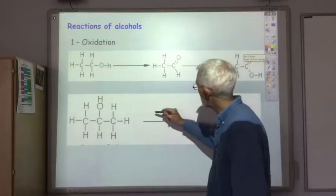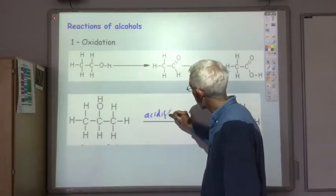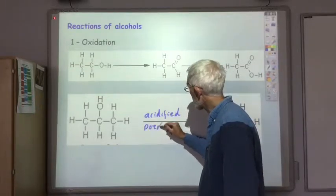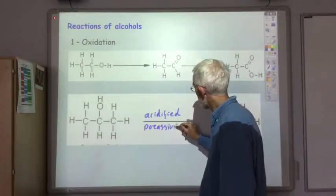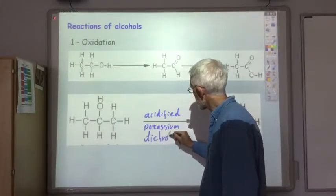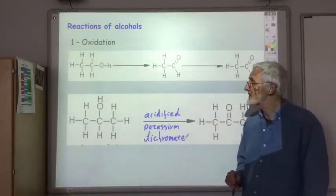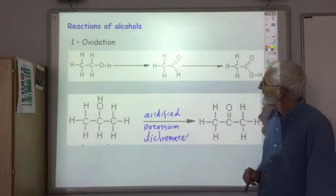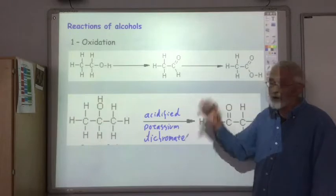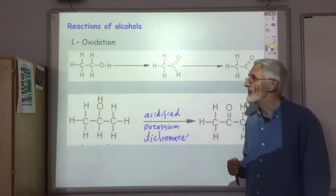Now the reagent we'd use for carrying out these oxidations is usually acidified potassium dichromate. That's probably the most common oxidising agent that we use. Okay so really that's just a reminder of stuff that you learnt in higher, you still expect to remember that.